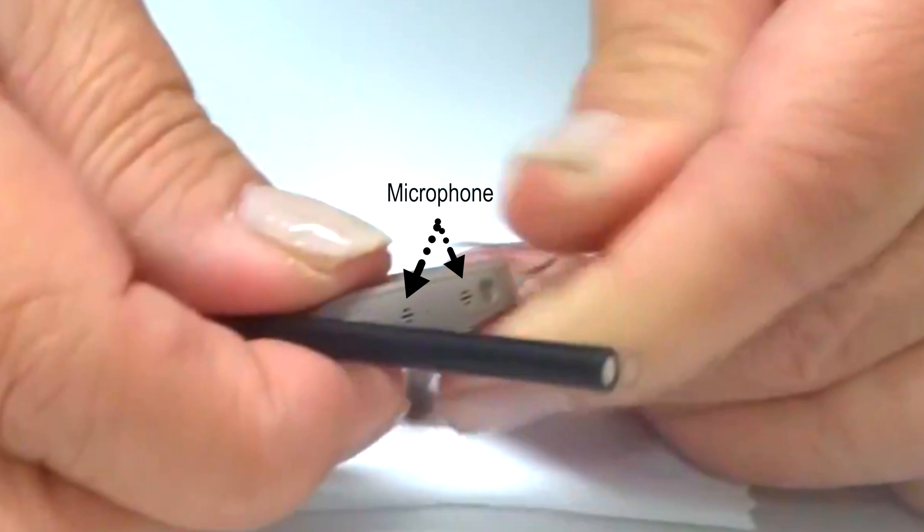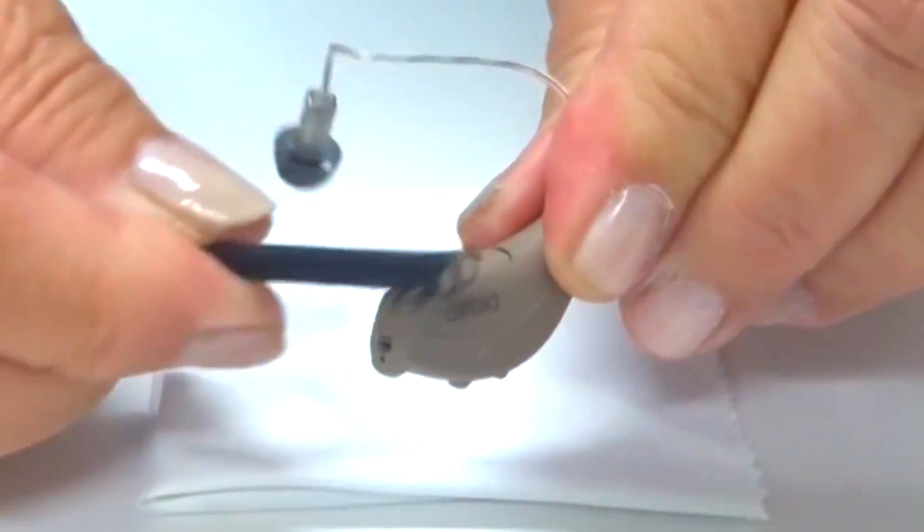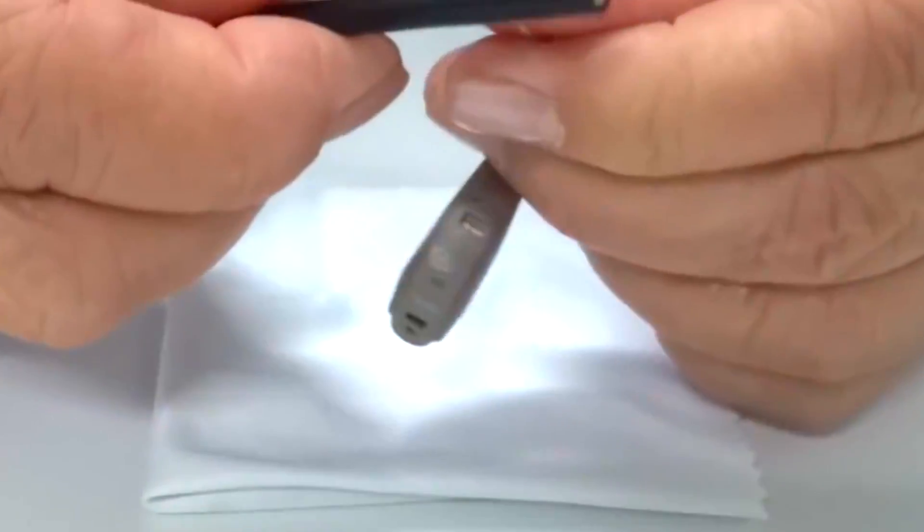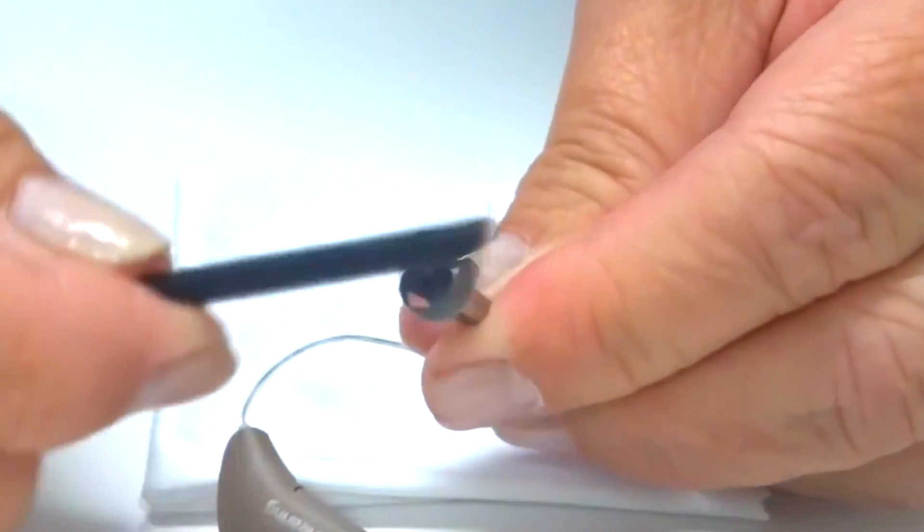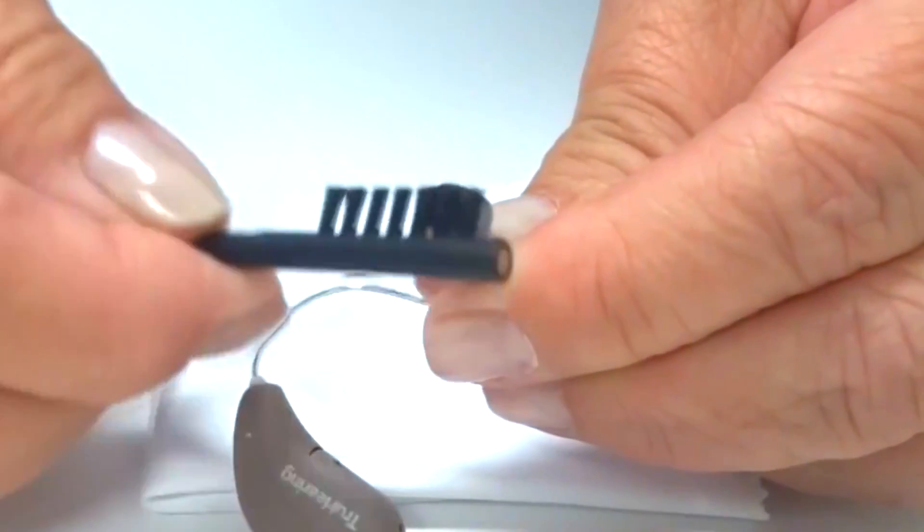Debris plugging the microphone will cause the hearing aid volume to be lower than normal. A brush can also be used to clean the hearing aid dome. If any earwax debris is still clogging the opening, remove the dome.